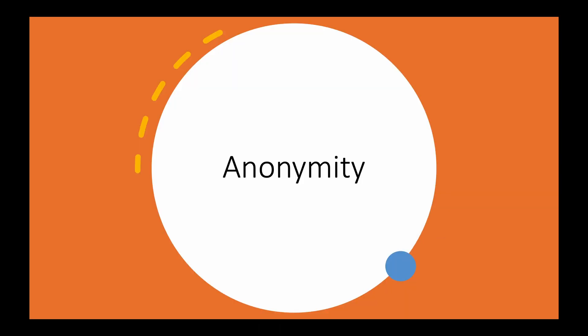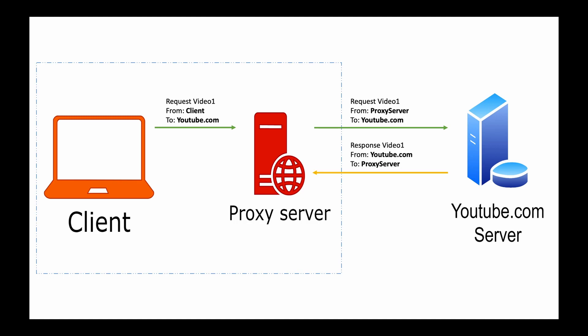Another advantage is anonymity. In the case of forward proxy, the server doesn't know about the end client. As we can see in this example, when the client originally makes a request it goes from the client to youtube.com. But when it reaches the proxy server, the 'from' changes from client to proxy server. And similarly, the same thing happens with the response. So it introduces the notion of anonymity.